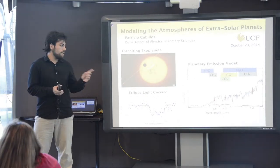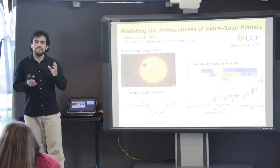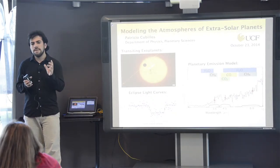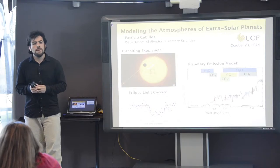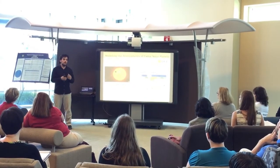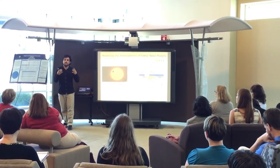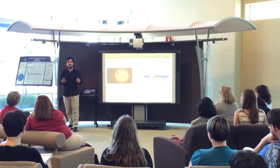This molecule absorbs specifically at 4.5 microns. So if we see that the planet emits particularly in this specific range, we can infer that there is a significant amount of carbon dioxide in the atmosphere.